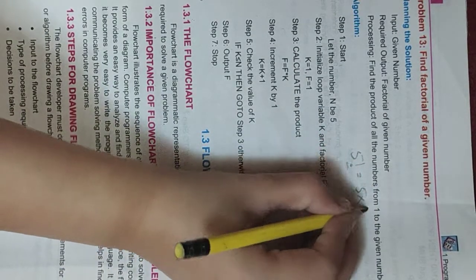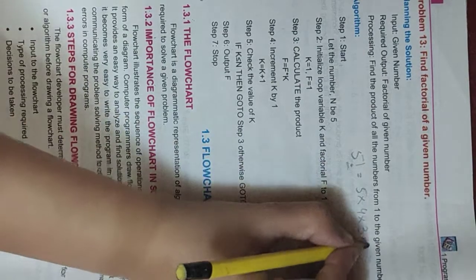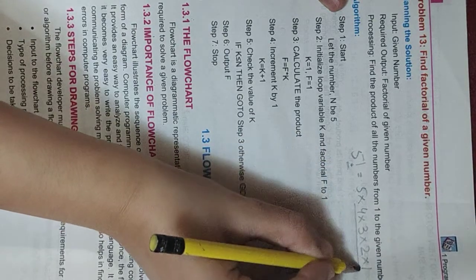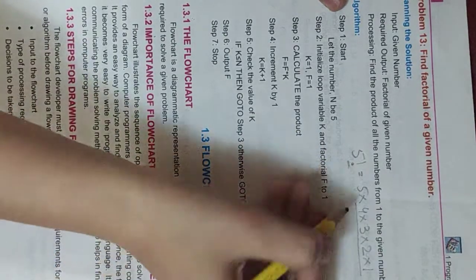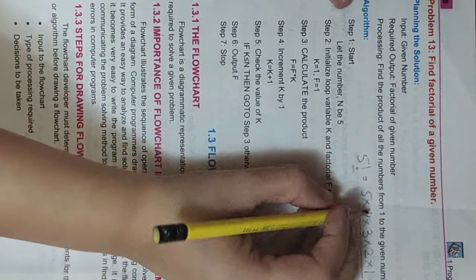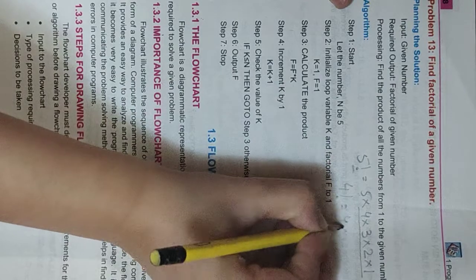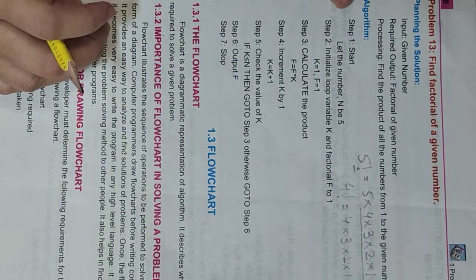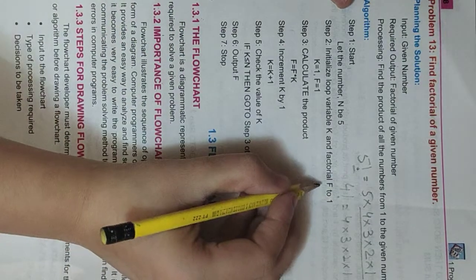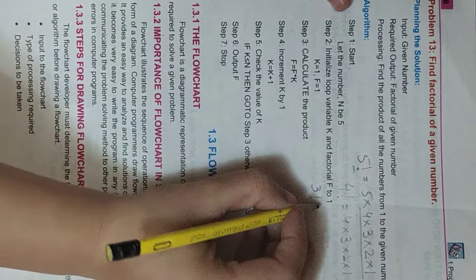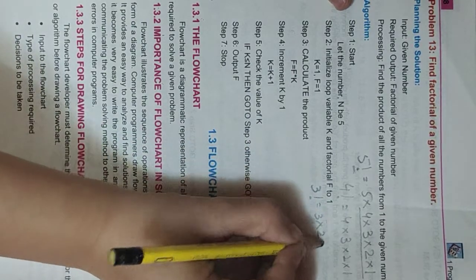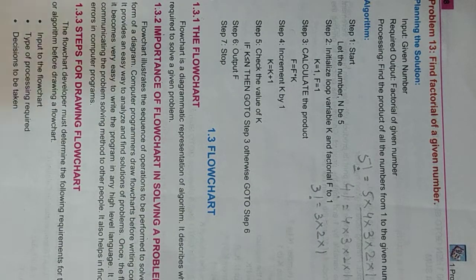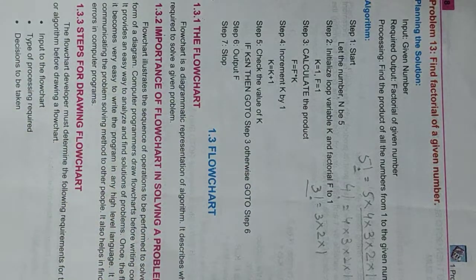5 multiplied by 4, multiplied by 3, multiplied by 2, multiplied by 1. Similarly, if we find the factorial of 4, it is 4 multiplied by 3, multiplied by 2, multiplied by 1. And for 3, the factorial is 3 multiplied by 2 multiplied by 1.